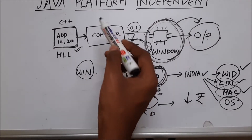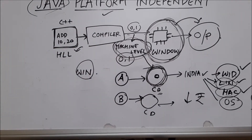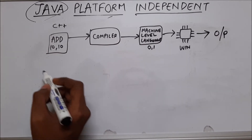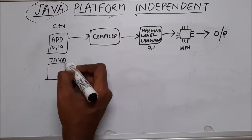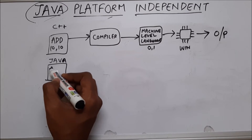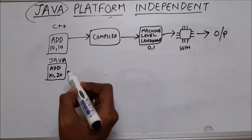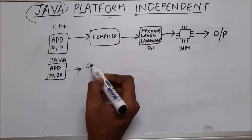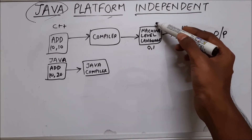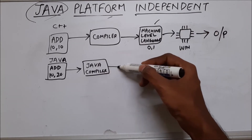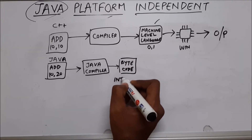They came up with a solution — platform independence. So let's see how Java tackles this problem. Java also has code, let's say to add two numbers — adding 10 and 20. What the Java compiler will do is it is not going to give us machine level language. Instead, it gives us something called bytecode, which is also called intermediate level code.